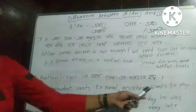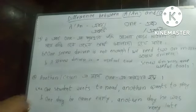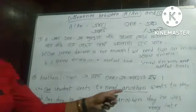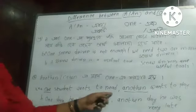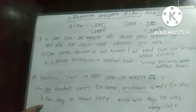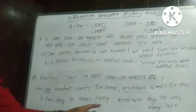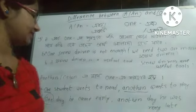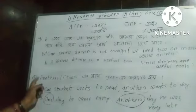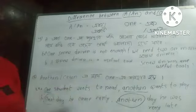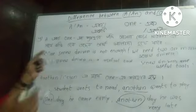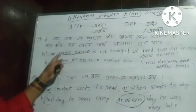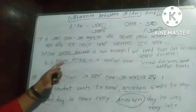For example: one student wants to study, another wants to play. Here 'another' signals the next one among several. Next sentence: one day he came early, another day he was very late. 'Another day' means a different day. Note that 'another' is used when we are talking about one more, which is higher than the original one — it is a noun or adjective.